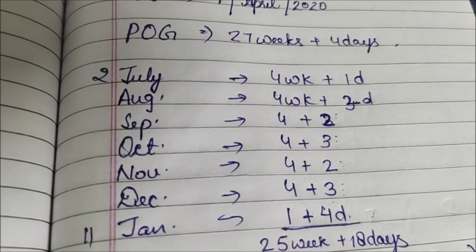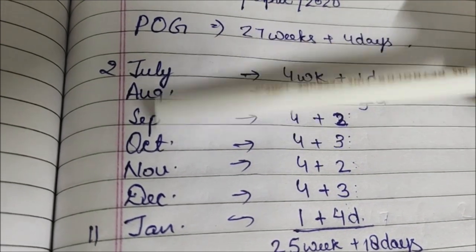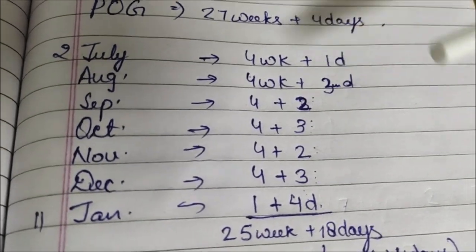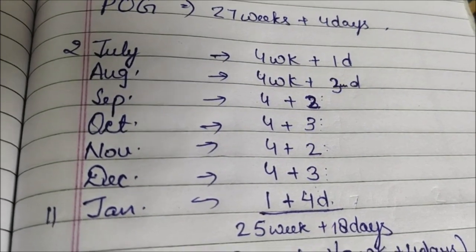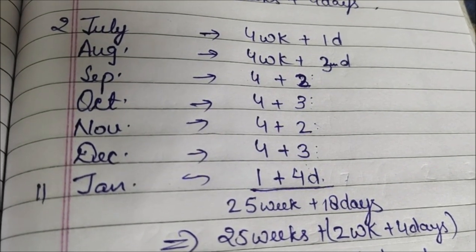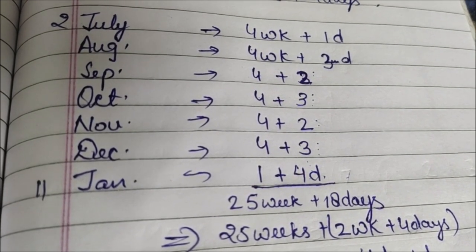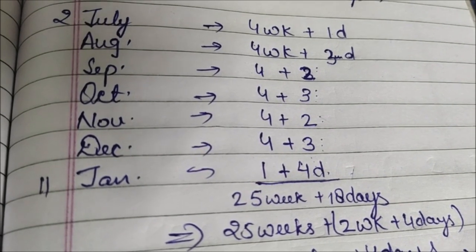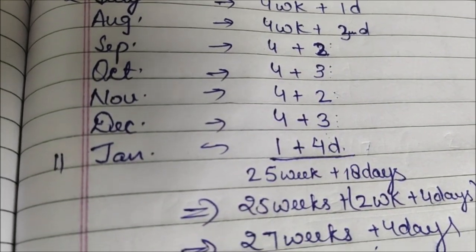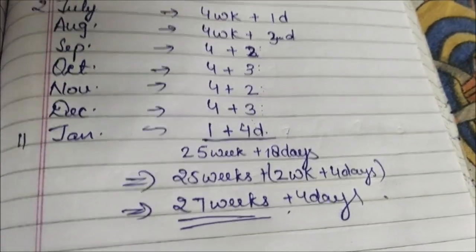Let me explain how this is calculated. First, we analyze each month. From 2nd July, that is 4 weeks and 1 day. August has 31 days, which is 4 weeks plus 3 days. September has 30 days, that is 4 weeks plus 2 days. October has 31 days, that is 4 weeks plus 3 days. Continuing this way through to 11th January, the total comes to 25 weeks plus 18 days.